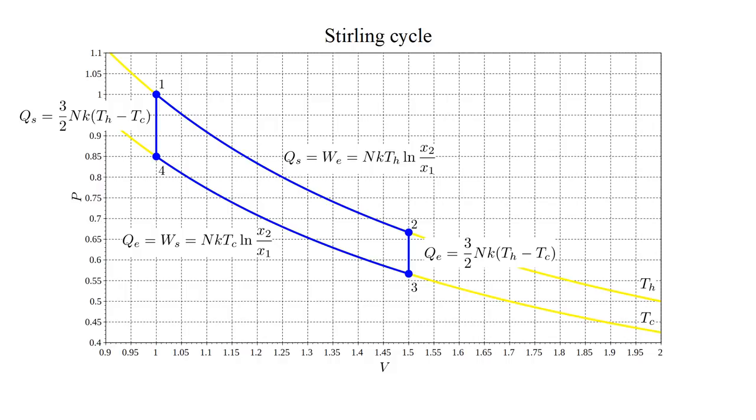Finally, warming the gas to bring the system back to state 1 requires heat QS to be transferred from the hot reservoir to the system, equal to three halves NK T hot minus T cold.